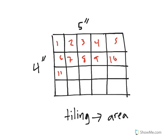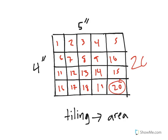I can see that a rectangle that is 5 inches by 4 inches will end up with an area of 20 inches squared. You can see 20 is the last number, 20 inches squared.